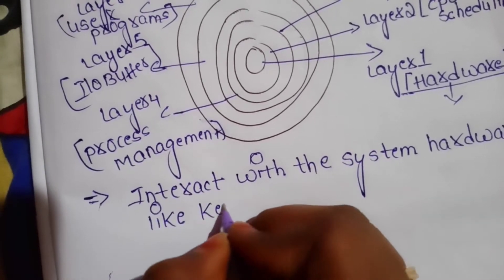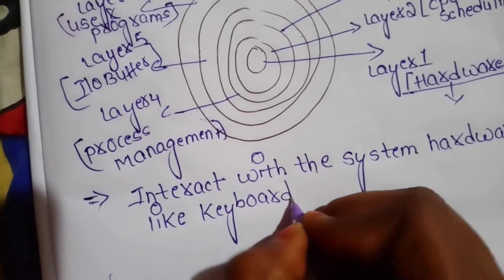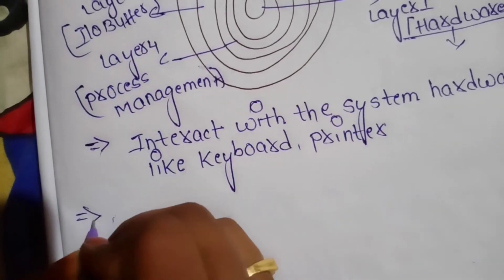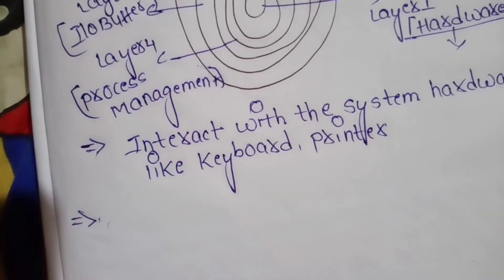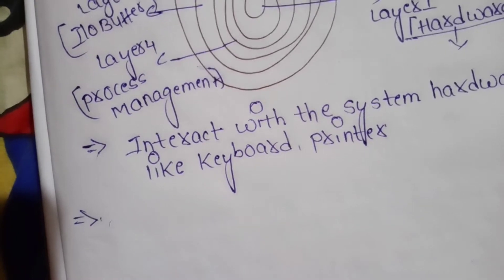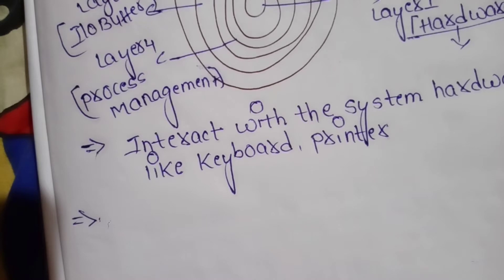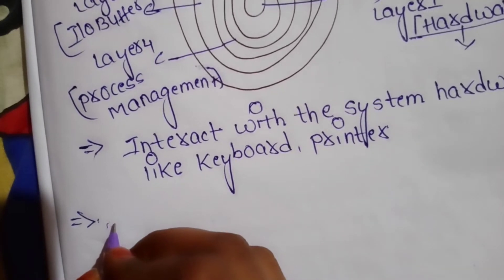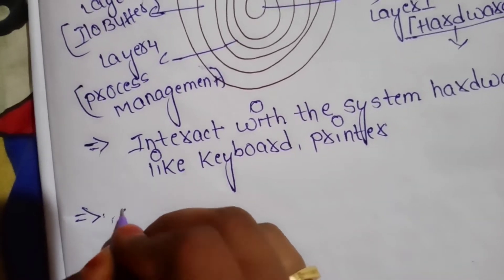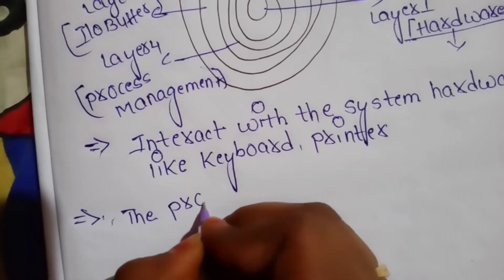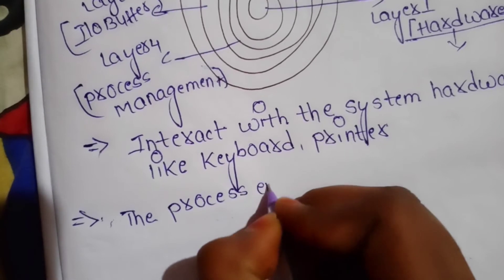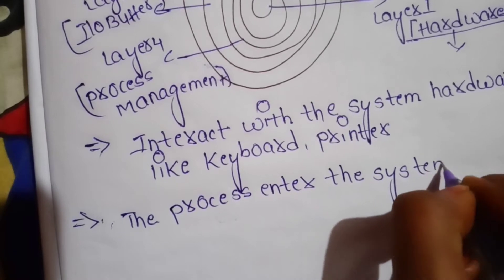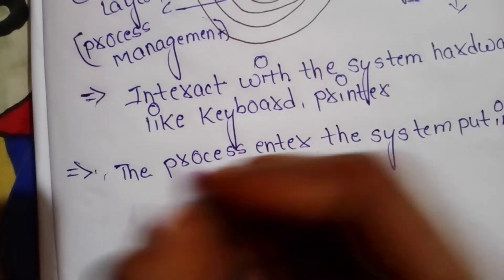Next is CPU scheduling. It manages the process of the CPU. When a process is in the waiting state, it will be stored in the job queue. When it is ready for execution, it will move to the ready queue, get executed, and then exit giving output.